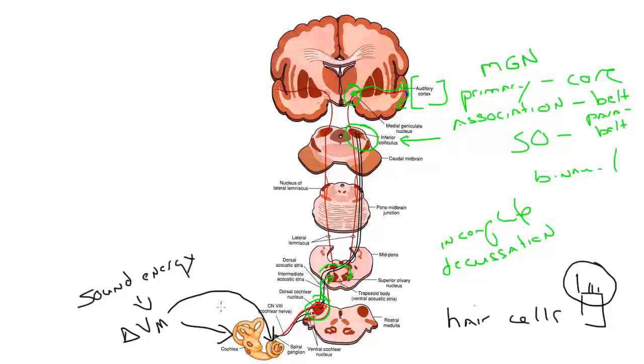So, auditory information starts with transduction. It ends in perception. And we'll have to deal with the fact that in the association areas of auditory cortex are those areas that are devoted toward recognition of sound. What is it? What does it mean? And then there are areas that are devoted toward figuring out where the sound came from. Where is it? And so, we'll look at those a little bit later on.